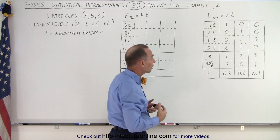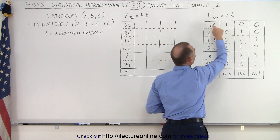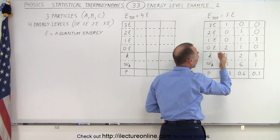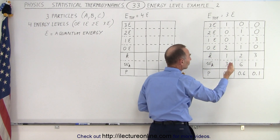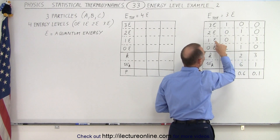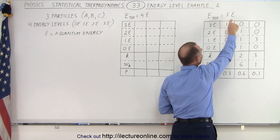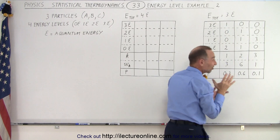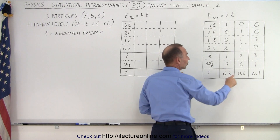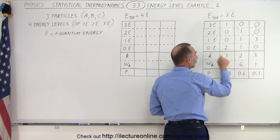So how can we arrange the particles? Well, we can have two in the zero energy and one in the three quantum energy level, and therefore when you add them together, that gives us three quantum energies — and that would be one of the macrostates. The second one was where we had one particle in the level that had two quantum energies, one in the level that had one quantum energy, and one in the level that had zero quantum energies. You add them together, you get three quantum energies, and we found out that there were six possible ways in which the particles could be arranged — six microstates in the second macrostate, three microstates in the first macrostate.